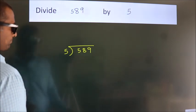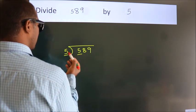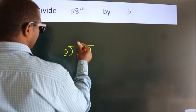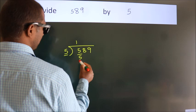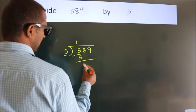Next. Here we have 5, here 5. When do we get 5? In 5 table, 5 once, 5. Now, we should subtract. We get 0.